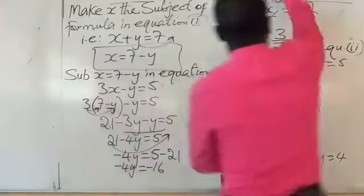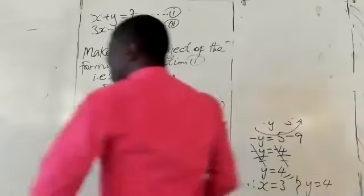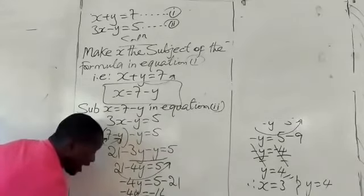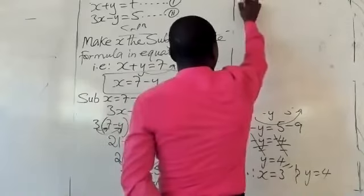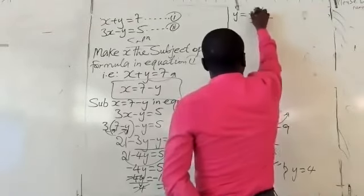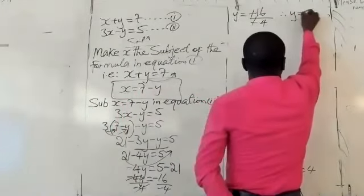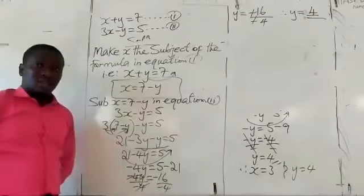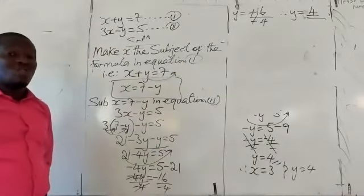Because we have to find the value of y, we divide both sides by the coefficient of y. We have minus 4y equals 5 minus 21, which is minus 16. So we divide both sides by minus 4. Minus 4 and minus 4 cancel on the left side, and y equals minus 16 divided by minus 4. Minus divided by minus gives plus, so y equals 4.